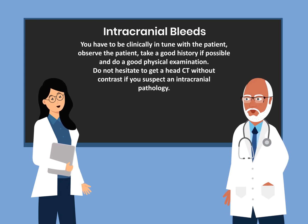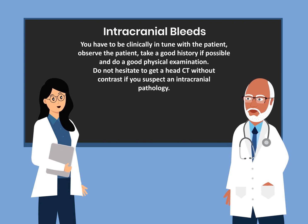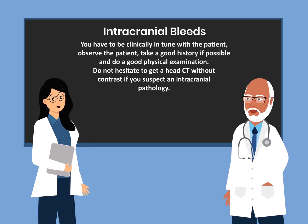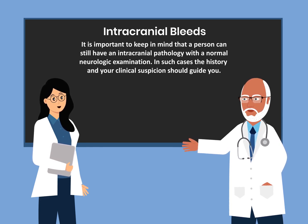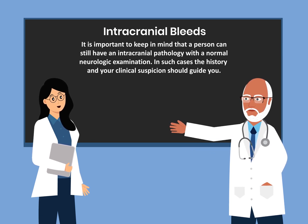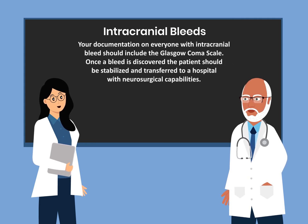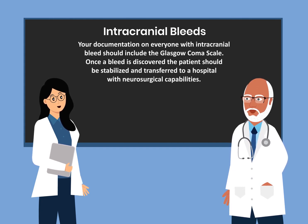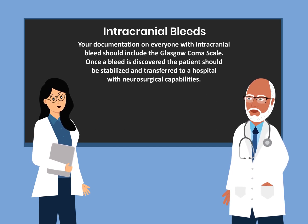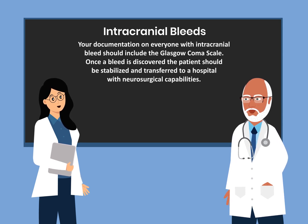You have to be clinically in tune with the patient — observe the patient, take a good history if possible, and do a good physical examination. Do not hesitate to get a head CT without contrast if you suspect intracranial pathology. It is important to keep in mind that a person can still have intracranial pathology with a normal neurologic examination. In such cases, the history and your clinical suspicion should guide you. Your documentation on everyone with intracranial bleed should include the Glasgow Coma Scale. Once a bleed is discovered, the patient should be stabilized and transferred to a hospital with neurosurgical capabilities.